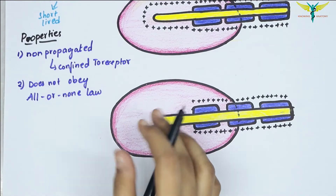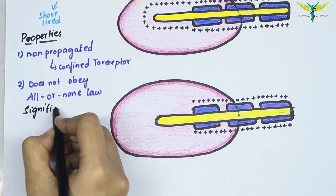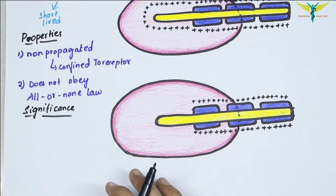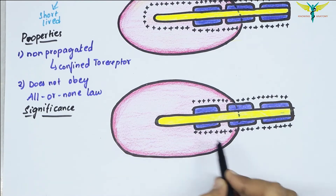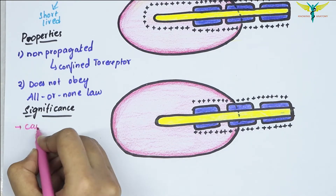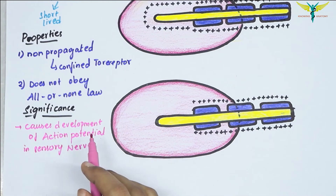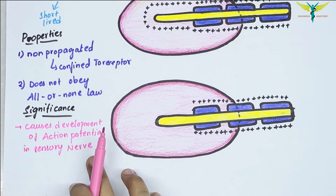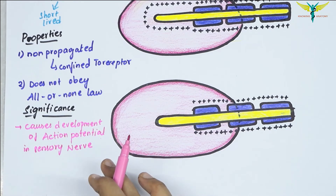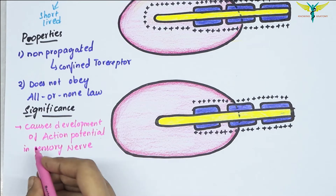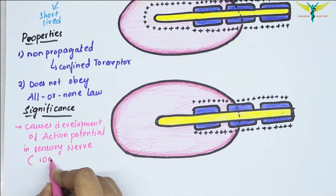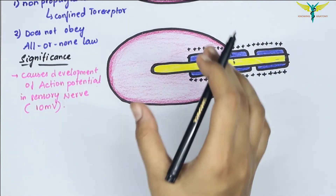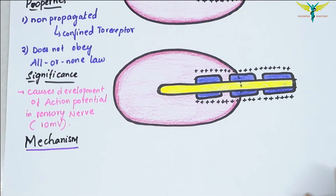The significance of the receptor potential is that when it is sufficiently strong, it causes the development of the action potential in the sensory nerve fiber. Sufficient strength means when the magnitude is about 10 millivolts.